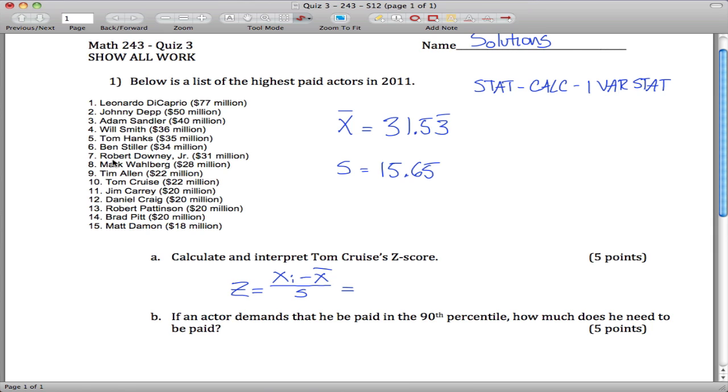For Tom Cruise here, he made 22 million. So 22 million minus the mean, 31.53 repeating, divided by 15.65, and you can figure that out with the calculator as negative 0.61.